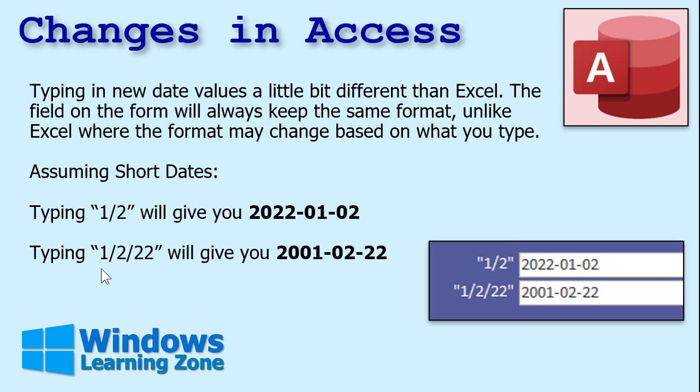And if you type in 1/2/22, same problem — you're going to get 1, 2, 22 in that format. So here's what you type in; here's what you get — minus the quotes, of course.